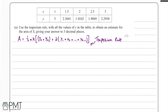There are a few bits of information we need to carry this out. We need to work out what h is, and then work out y₀, yₙ, and all the other y values along the way. h is the width of the strips, and we can work this out by looking at the difference between each value of x in the table. We go from 1 to 1.5 to 2 to 2.5 to 3, so each difference is 0.5. Therefore h = 1.5 − 1 = 2 − 1.5 = 0.5.